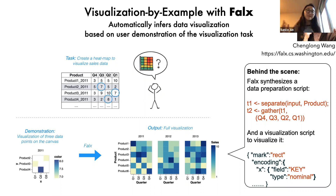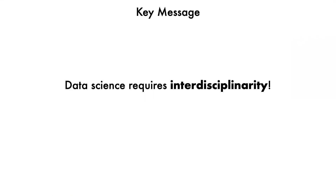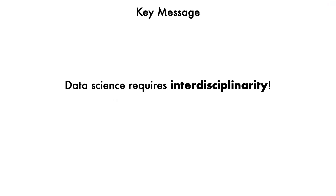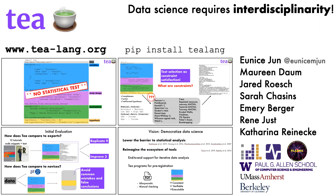As you've seen through the examples from IDL and UW PLSE, data science requires and incorporates a large number of perspectives and approaches from different domains. For end-user tools in particular, they require a growing understanding of how people like to work with data and how we can better support a wide range of users. Data science is a really exciting area of research that requires many different perspectives and techniques from computer science and beyond. Thank you so much for your attention.